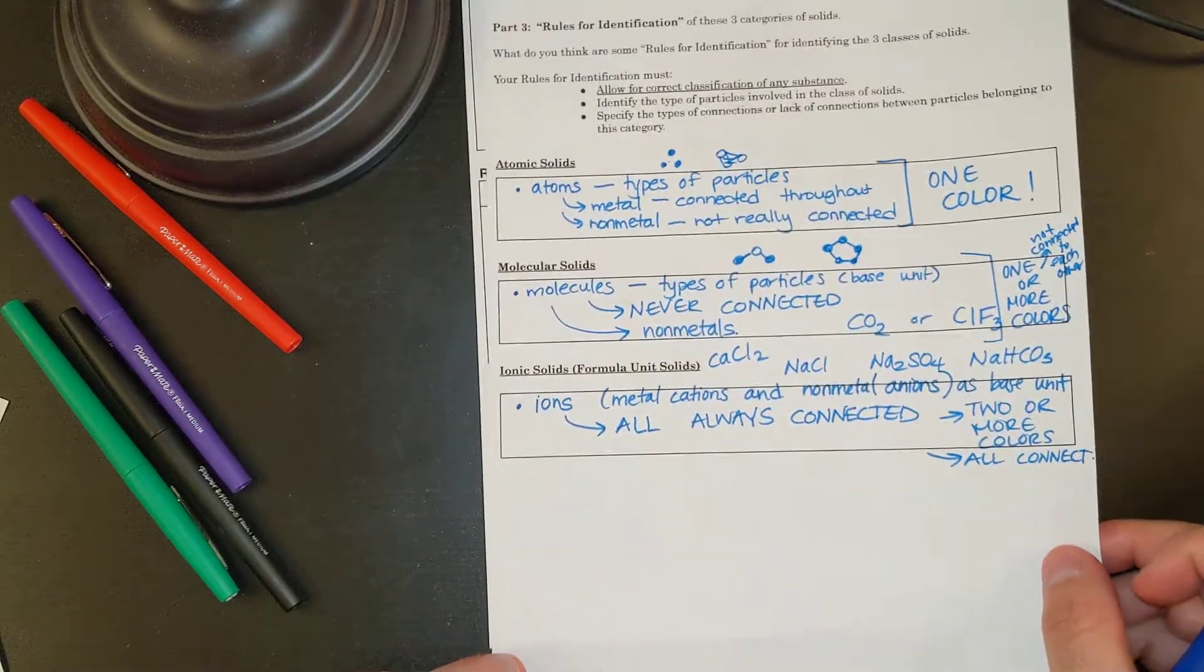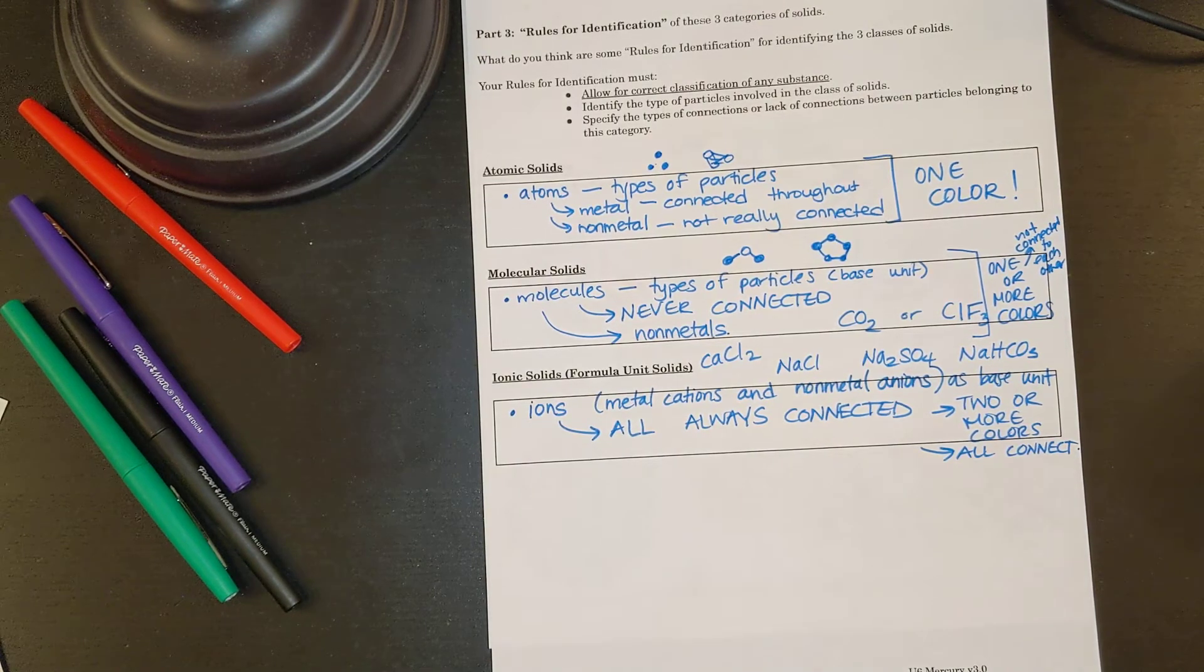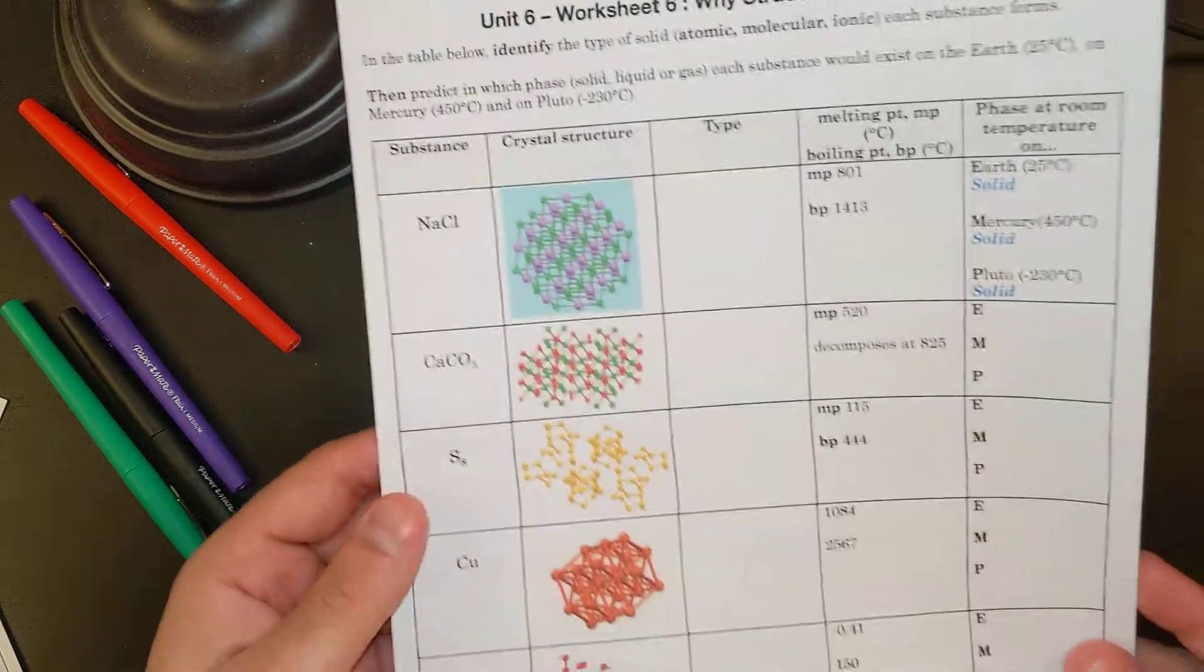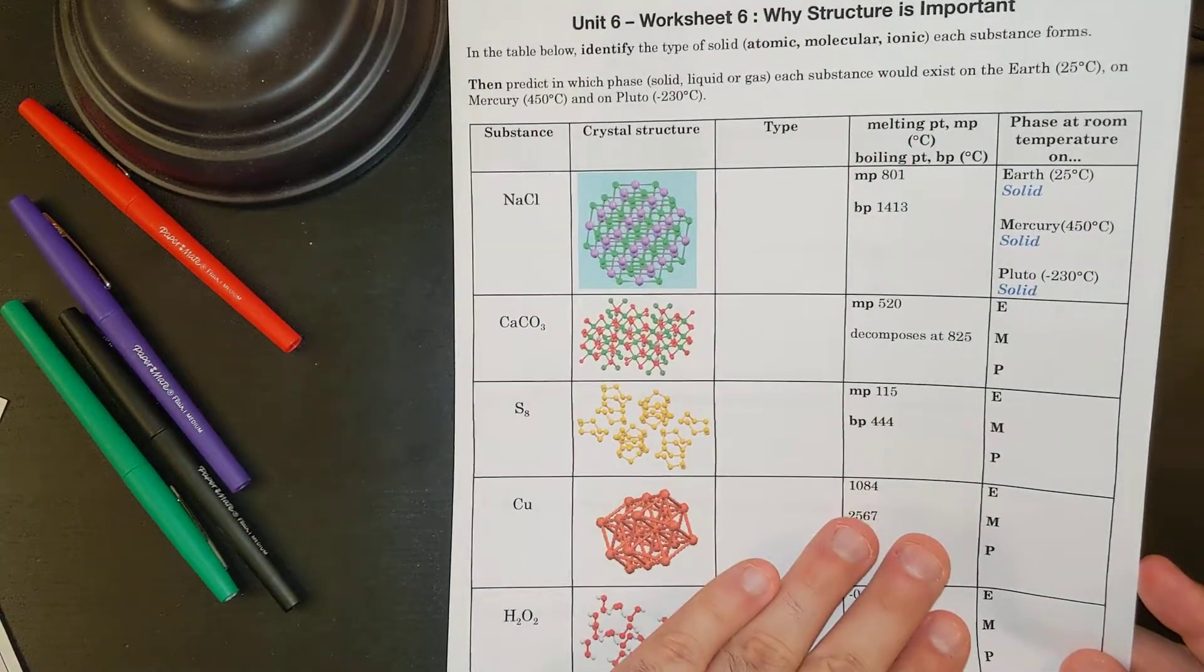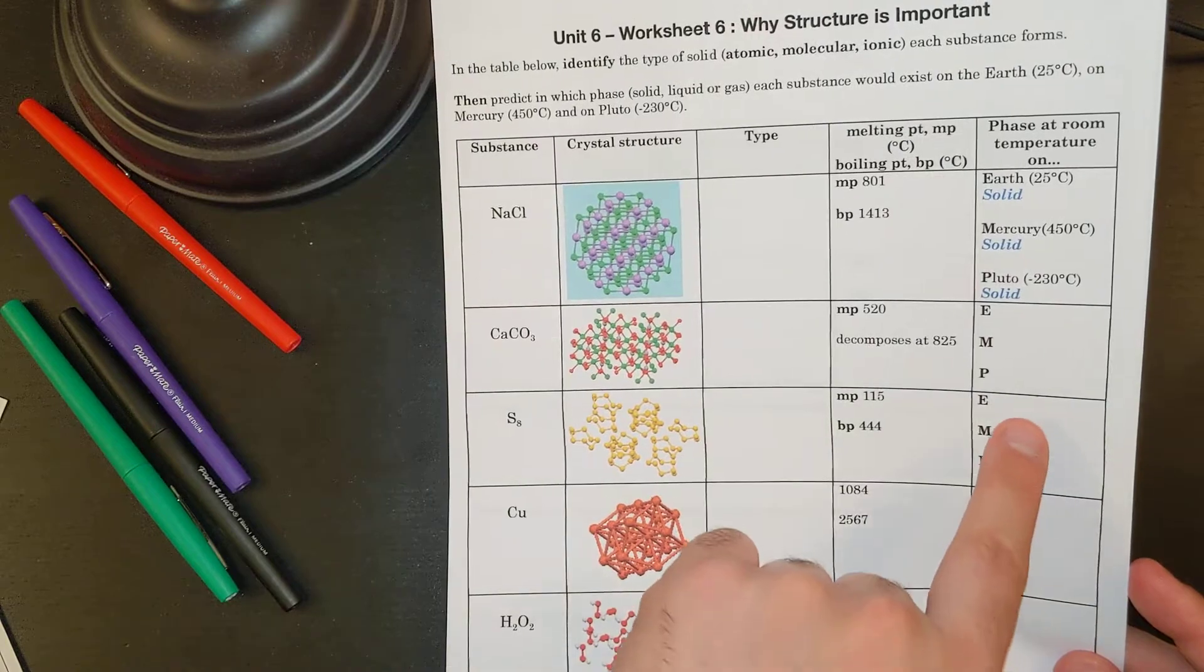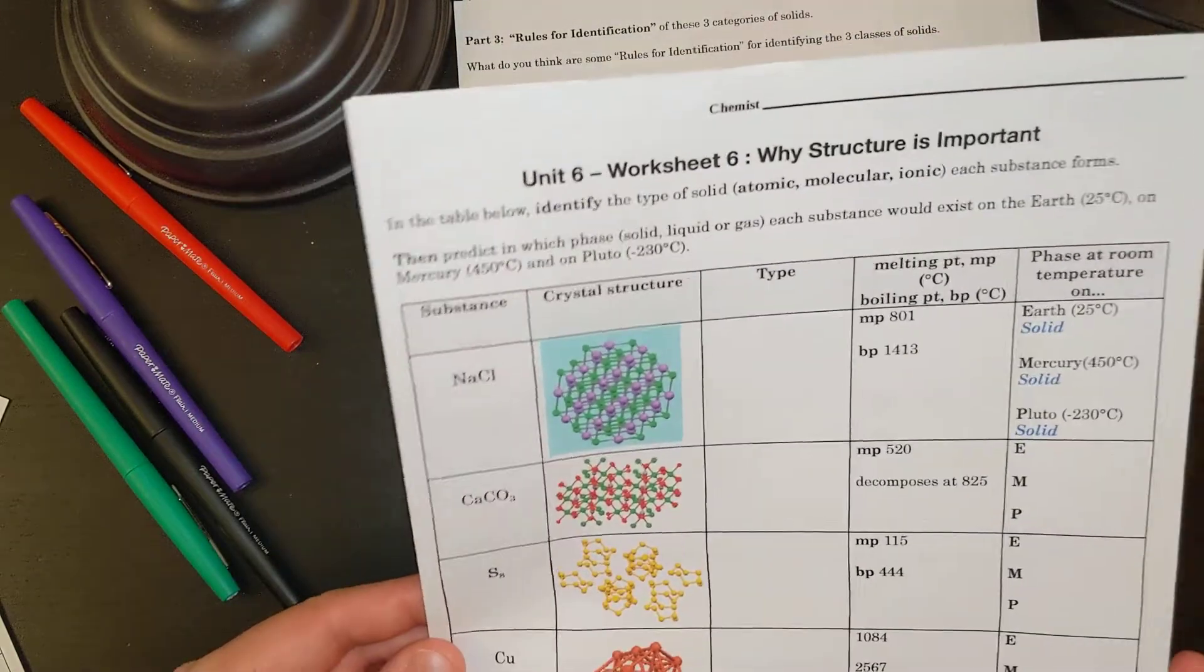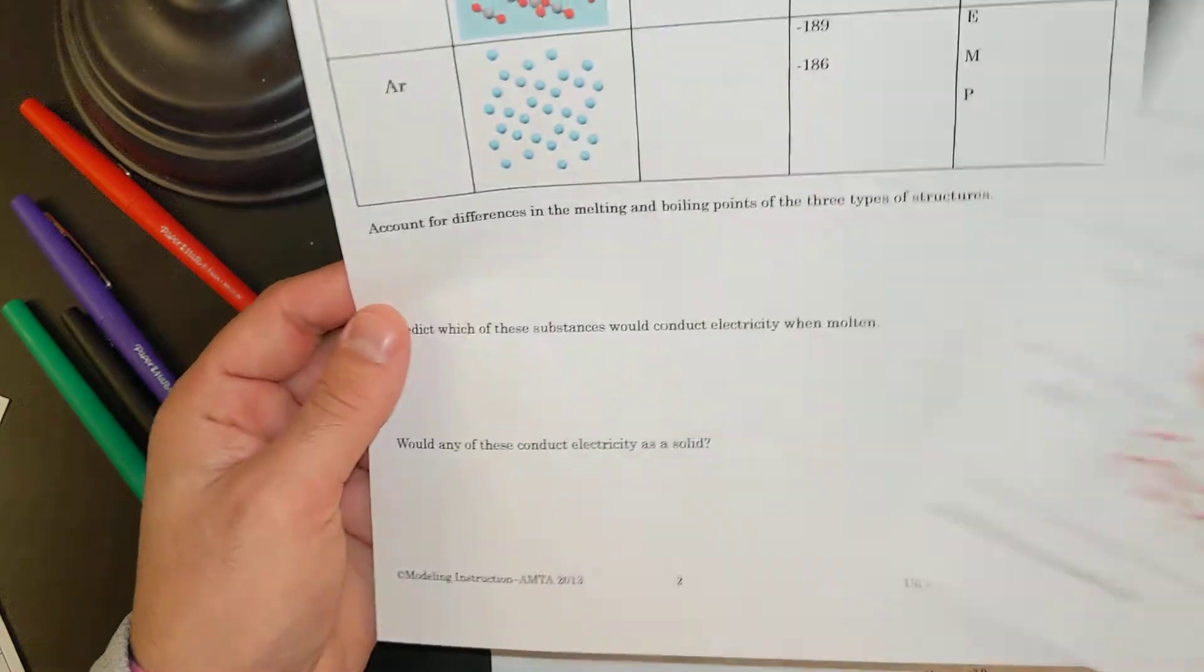All right. So we're going to use these three sets of rules here now. And you're going to eventually move on to next, when you have the chance, to worksheet number six. Worksheet number six now is going to ask you to identify the types of solids. And you have the formula and the structure there. And then identify the type as atomic, molecular, or ionic. And then looking at the melting and boiling point, identify what state of matter it would be on the Earth, the Moon, or on Pluto. And you have to use the temperatures of the Earth, Moon, and Pluto. There is going to be a separate video in which I walk you through worksheet number six. But if you don't want to wait, you can move on to worksheet number six after getting our rules.